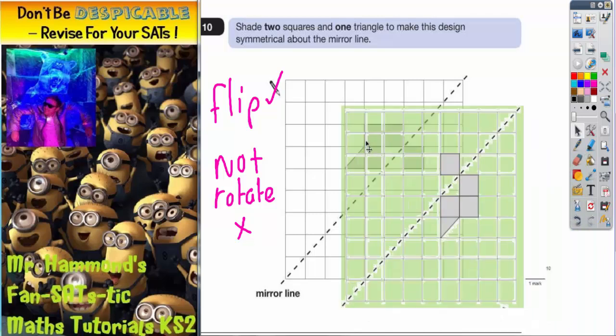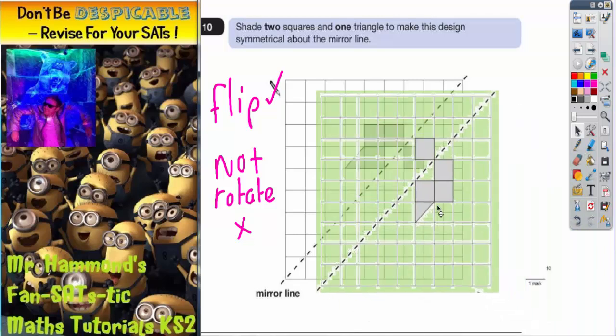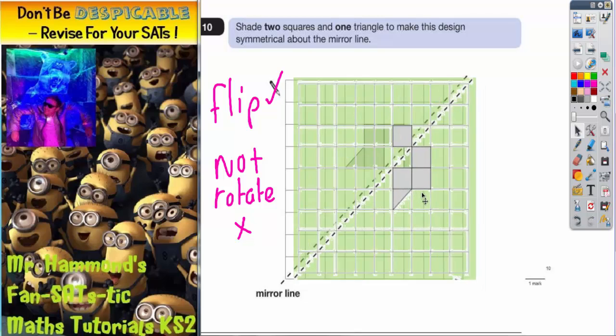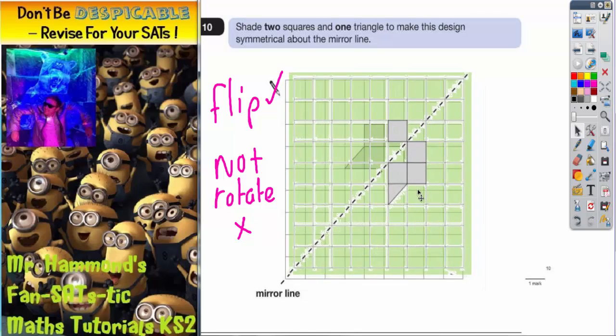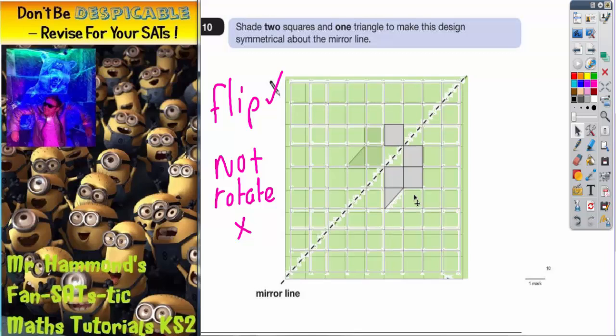Now, if you bring it in and place the dotted mirror line that you've traced over the top of the mirror line on the diagram, remember this tracing paper has already been flipped. Then you'll be able to see where you've got to draw the extra squares and triangles.